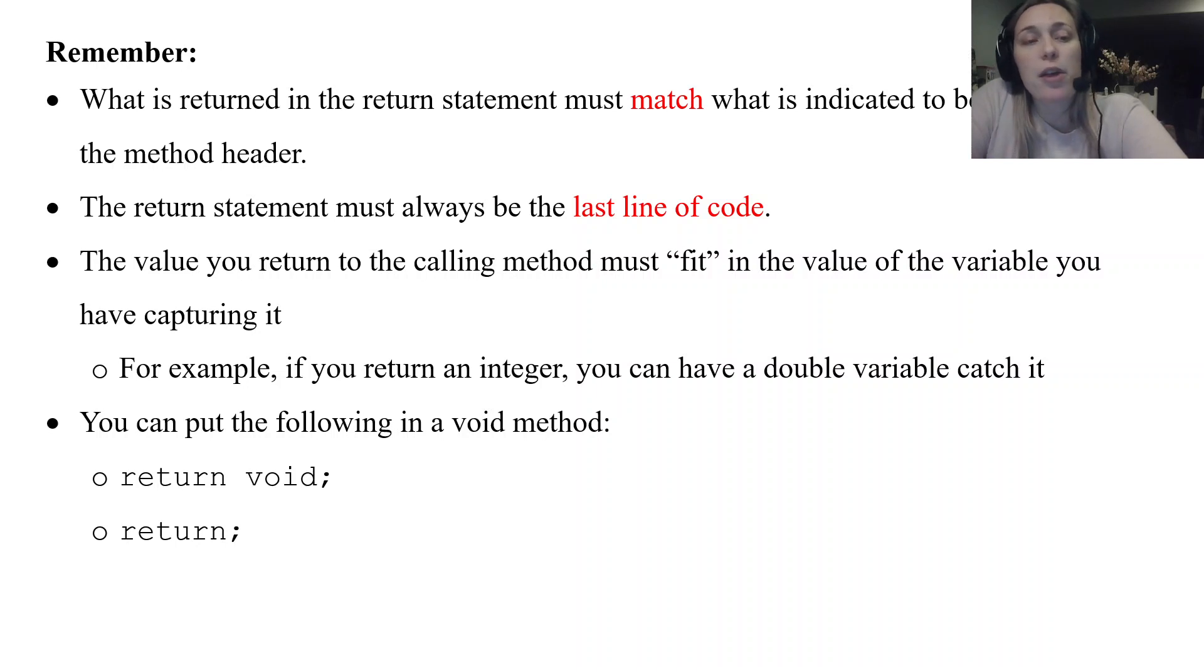Also another little small thing. If you do have a void method, you can technically return void or just do a return as its own statement to end the method. These are, these would be optional and usually aren't included in code. There are a couple of reasons why you might, but we'll learn about those later. Okay. But void methods technically can have a return statement. They just return void or they just return and then have the semicolon after it.